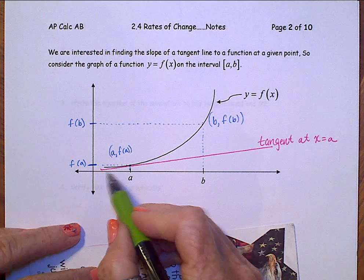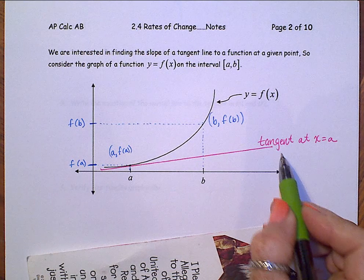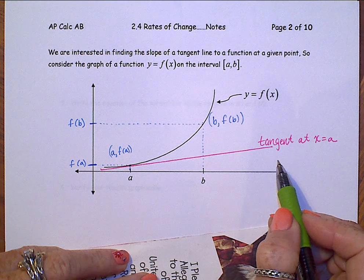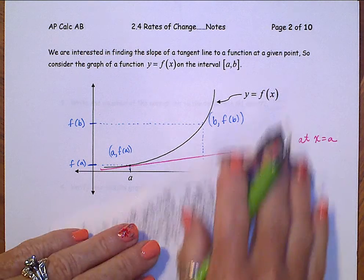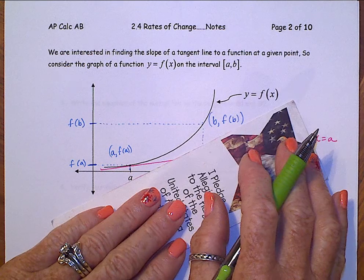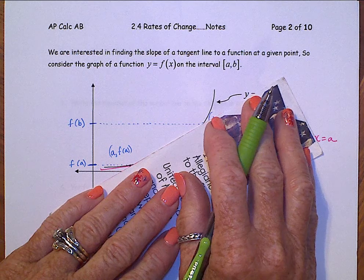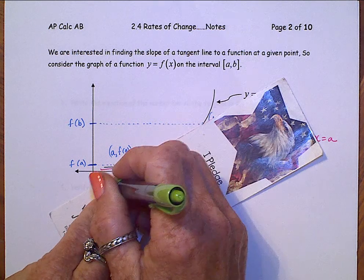And again, we're interested in finding the slope of that tangent line. Well, we don't have two points on that line, so we cannot write the slope. What we can do, though, is to draw a secant line, and a secant line connects these two points here.